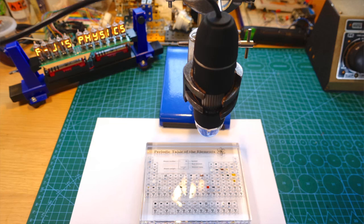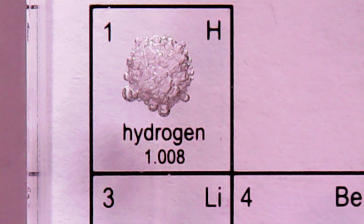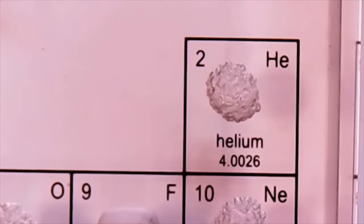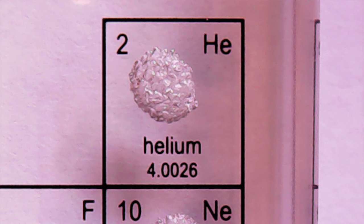I've got it under the microscope now and let's kick off with hydrogen. Hydrogen is famous for the Hindenburg disaster — if there's actually any hydrogen in here it's difficult to know — and also possibly the fuel of the future. We're going to slide right the way across now, and there's helium. You're all familiar with helium party balloons, and it's also quite an important gas used for cooling superconducting magnets.